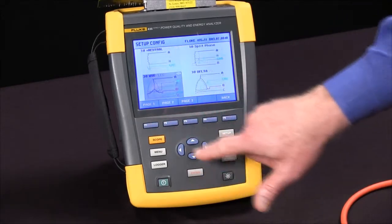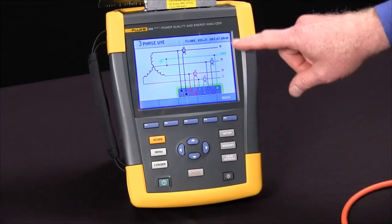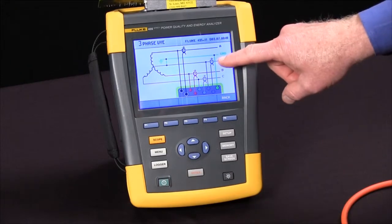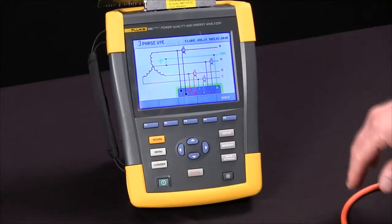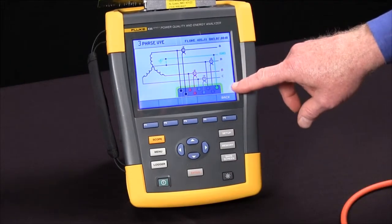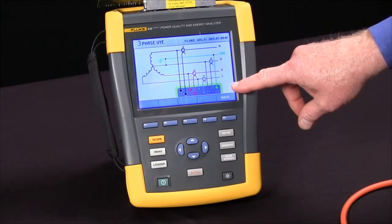If we come back to page one and hit the enter key, we'll see a wiring diagram that shows us where to put our CTs as well as our voltage connections, all color-coded to match the labels on the cables and the inputs to the 435.